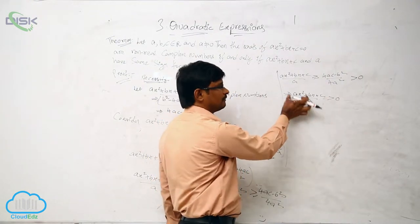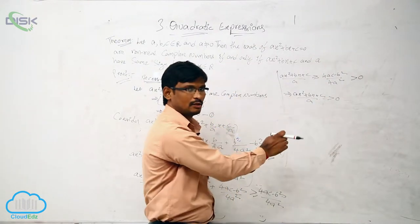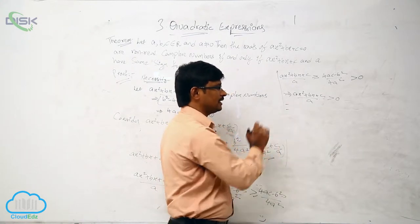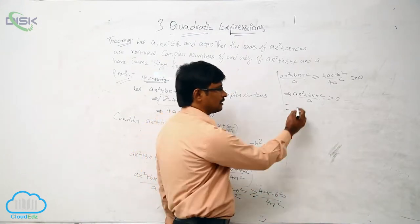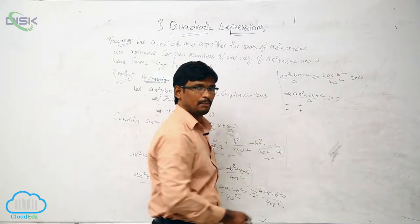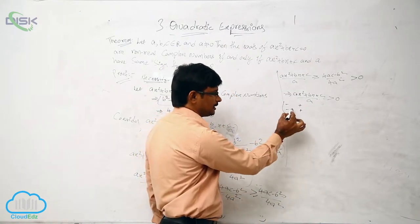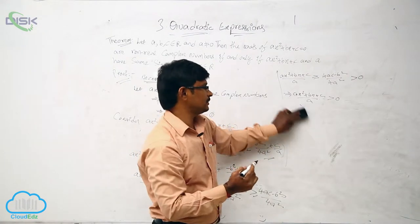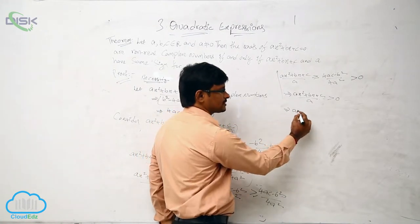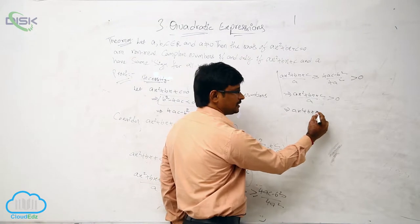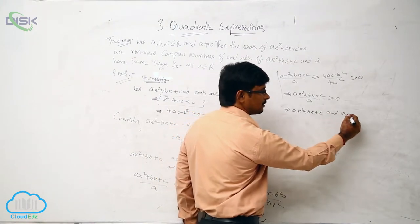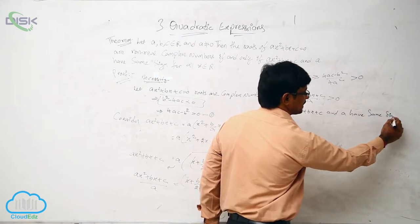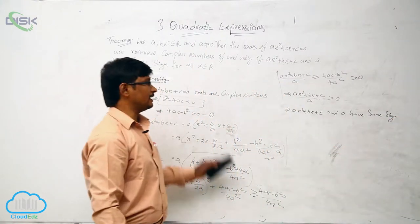This total value is greater than 0. When a fraction will be greater than 0, either the numerator and denominator are both negative, or both are positive — they must have the same sign. This means Ax squared plus Bx plus C and A have the same sign. So having the same sign is the necessary condition.